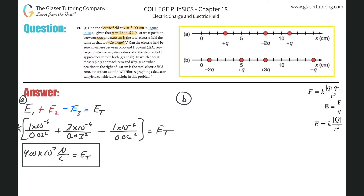Since we don't know where the point is, we'll choose a random point and call its distance from charge one 'x.' We know the total distance between the two positive charges is eight centimeters, which we'll convert: 0.08 meters.